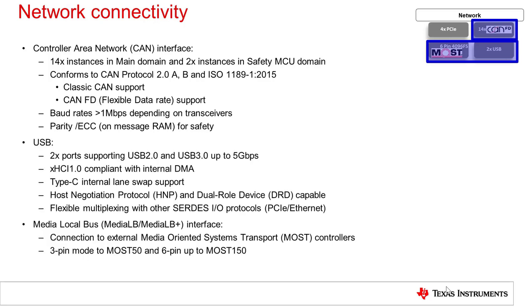Jacinto 7 provides up to two USB ports supporting USB 2.0 or USB 3.0 up to 5 gigabit per second. All USB ports support both device and host modes, or reversing roles via software or HNP protocol. The USB 3.0 ports also support internal lane swapping to support cable reversal for USB Type-C without requiring any expensive external analog switch. The SoC also supports a 3-pin or 6-pin media local bus interface for connection to a MOST network controller operating at up to MOST 150 performance rates.